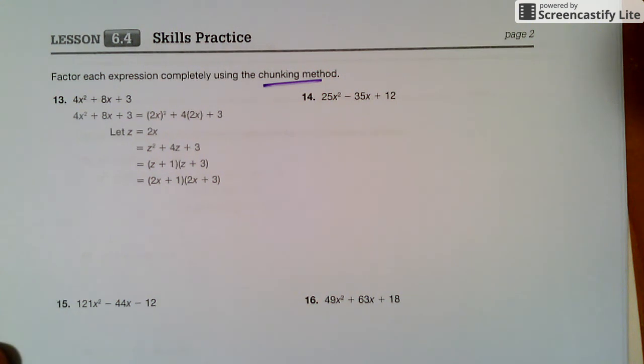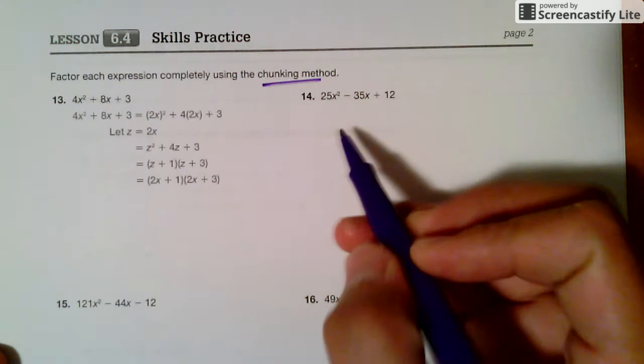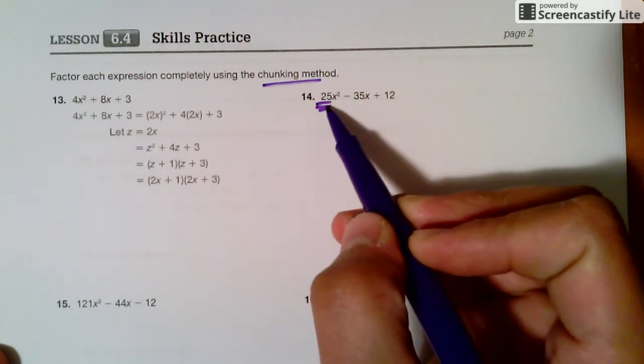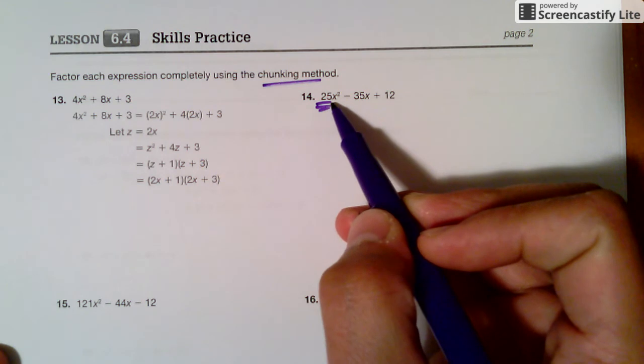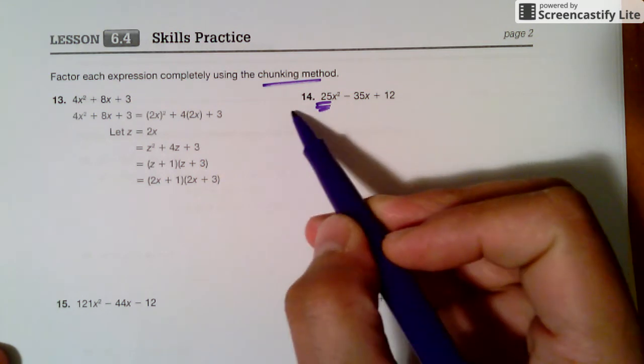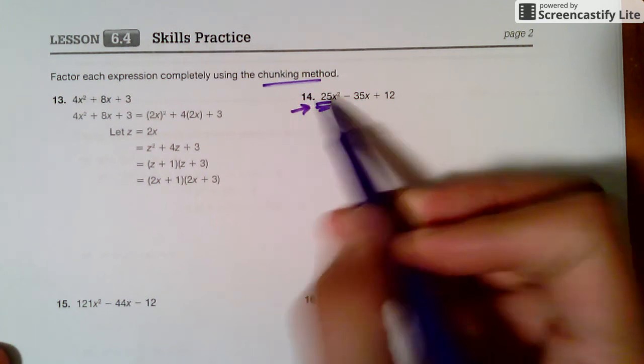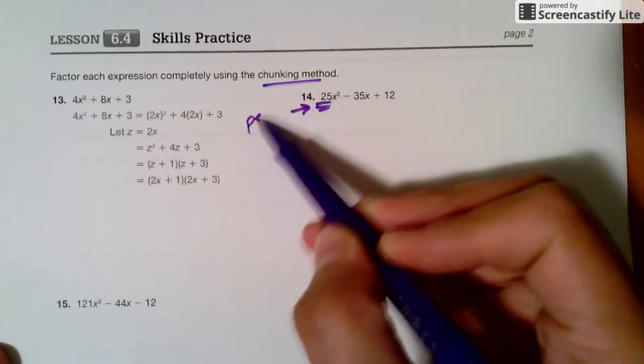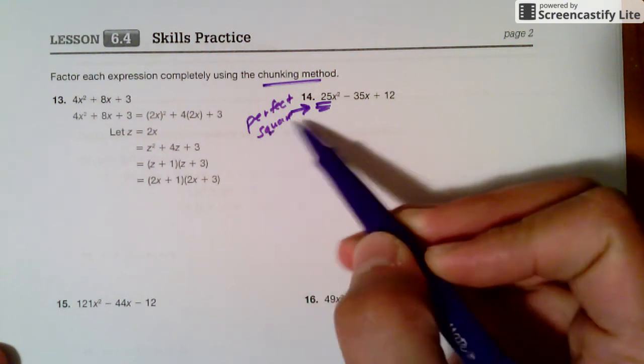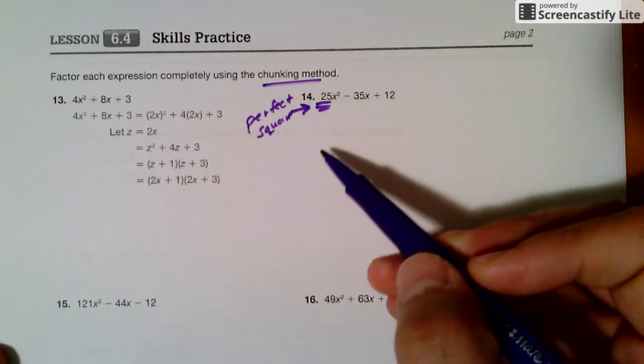Factor each expression completely using the chunking method. The chunking method is when we group or chunk pieces. When you're first using this method, you're going to realize this first number is still an x-square, but this first number isn't a 1 anymore. In order for the chunking method to work, this first number actually has to be a perfect square. If it's not a perfect square, they might not want to use the chunking method.